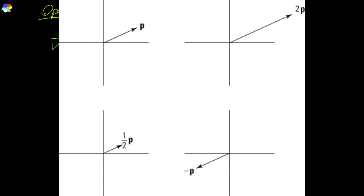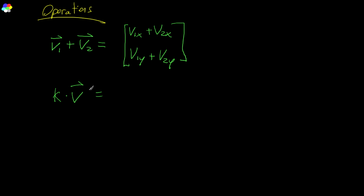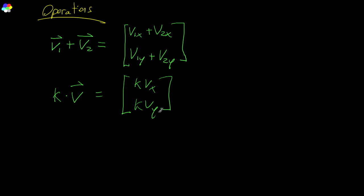We can scale a vector, which is to say we can grow it or shrink it by a factor. We do this by multiplying the vector by what we call a scalar. A scalar is just a normal number like 5, 2.3, or zero. A vector has an x component and a y component for a two-dimensional vector. If we multiply a scalar by a vector, we scale the vector — funny how that works. You multiply scalar k by vector v, meaning multiply k by v.x and k by v.y. It's that simple.